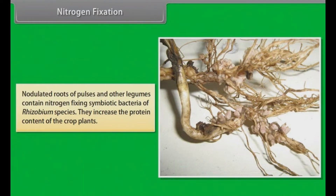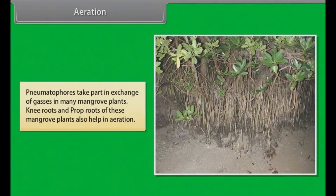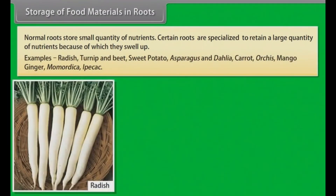Aeration: Pneumatophores take part in exchange of gases in many mangrove plants. Knee roots and prop roots of these mangrove plants also help in aeration. Storage of food materials in roots: Normal roots store small quantities of nutrients. Certain roots are specialized to retain a large quantity of nutrients, because of which they swell up. Examples: radish, turnip, beet, sweet potato, asparagus, dahlia, carrot, mango ginger, Momordica, ipecac.